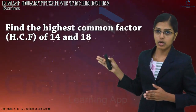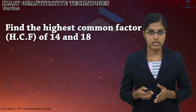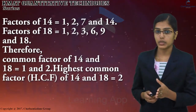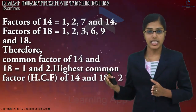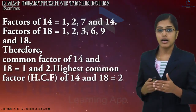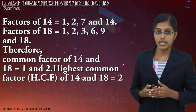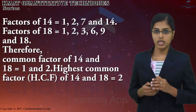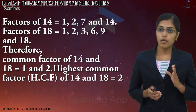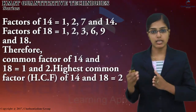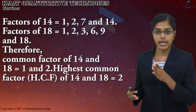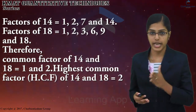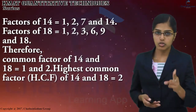Find the highest common factor of 14 and 18. Factors of 14 are 1, 2, 7, and 14. Factors of 18 are 1, 2, 3, 6, 9, and 18. Therefore, common factors of 14 and 18 are 1 and 2. The highest common factor of 14 and 18 is 2.